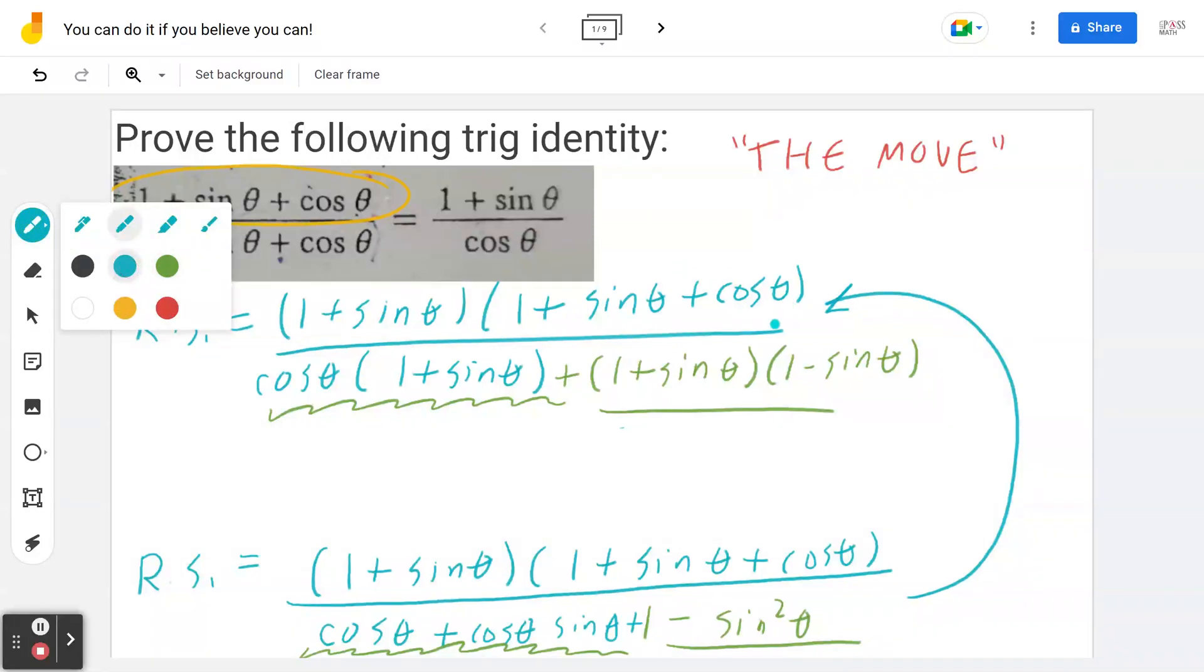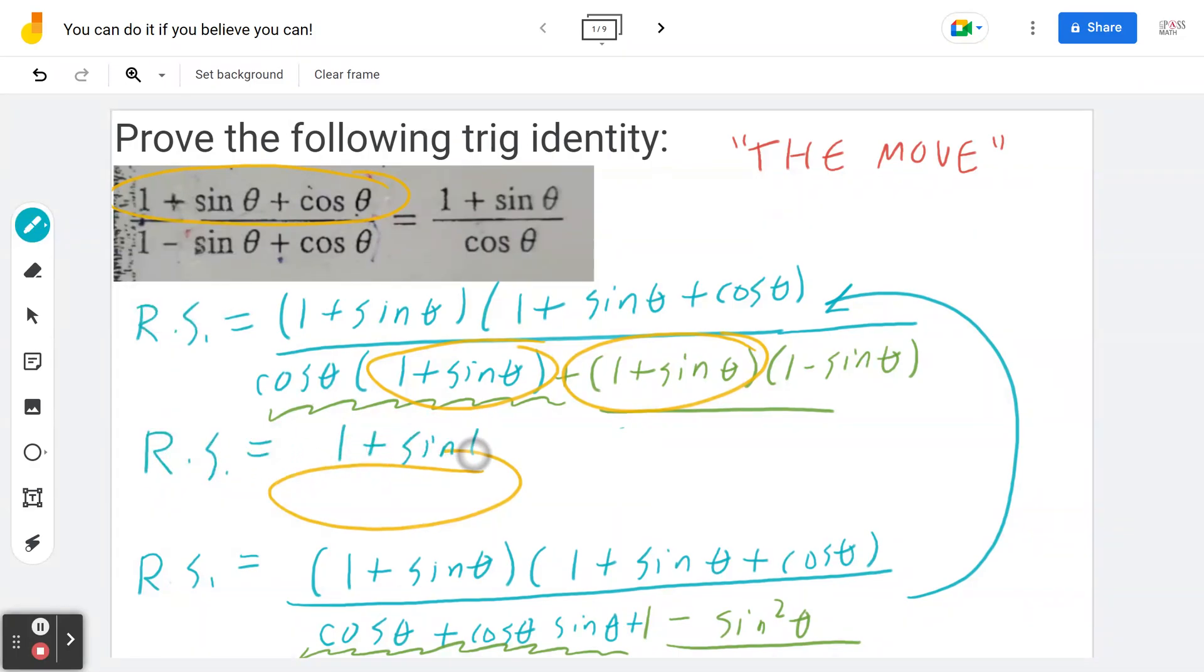Now you have to think about common factoring. So again, there's a common factor of 1 plus sin theta which is exactly the goal that I had in mind. So if you begin with the end in mind you reverse engineer. We're going to factor this in a moment. So again I'm copying the numerator. If I look at the denominator there's a common factor of 1 plus sin theta which I'll put in brackets. What is left? There's a cos theta plus 1 minus sin theta.